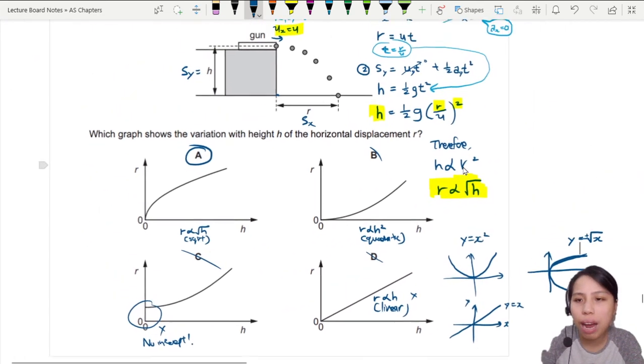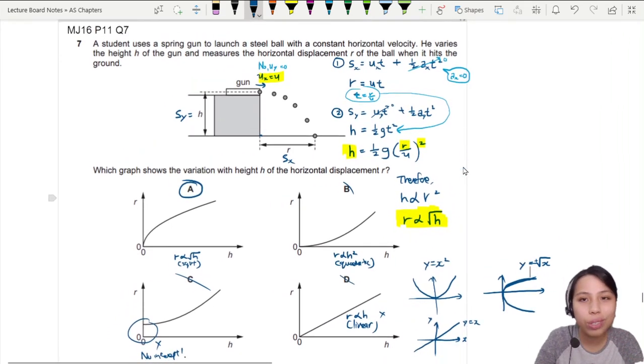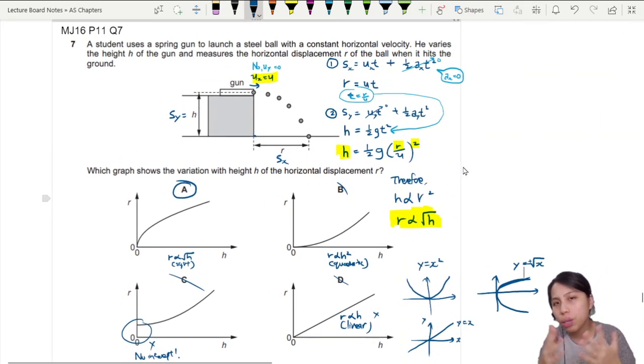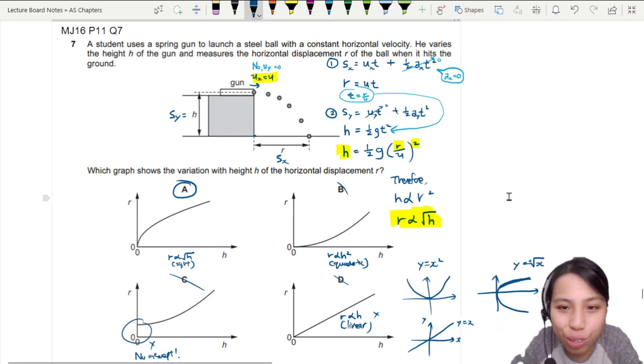But anyway, I hope that was helpful in thinking about questions like this. Remember, whenever you see a graph question, if it's possible, I mean if you want to guess, sure, go ahead. But if it's possible, come up with an equation that will convince yourself of the relationship between the graph. How is it curved? Is there an intercept or not? Y = mx + c. And that's all for this video. I will see you in the next one.